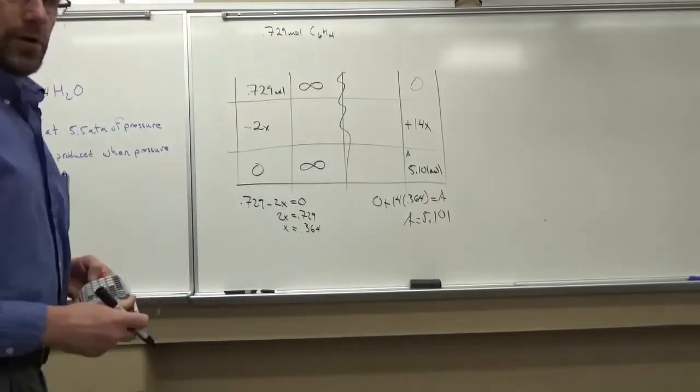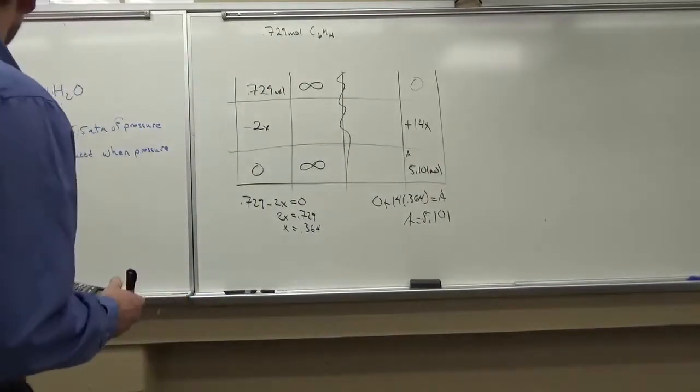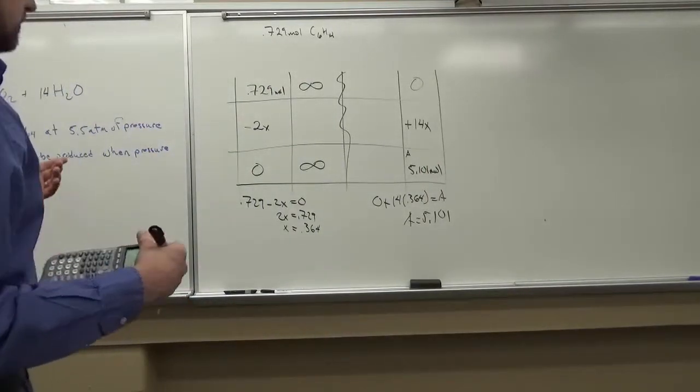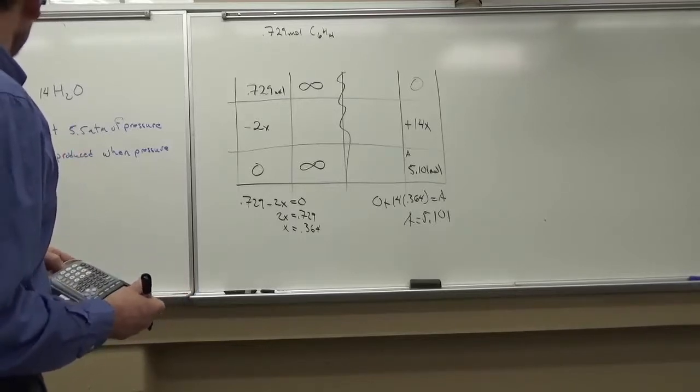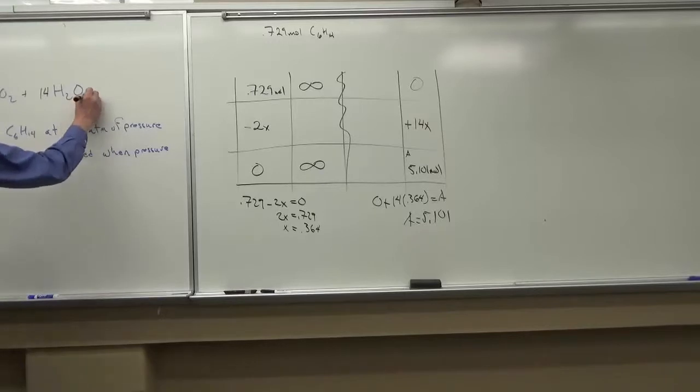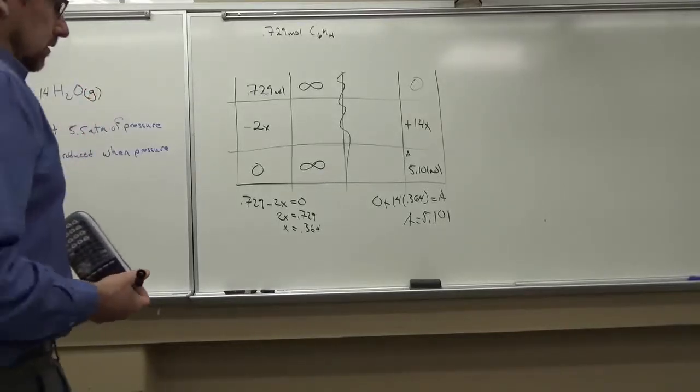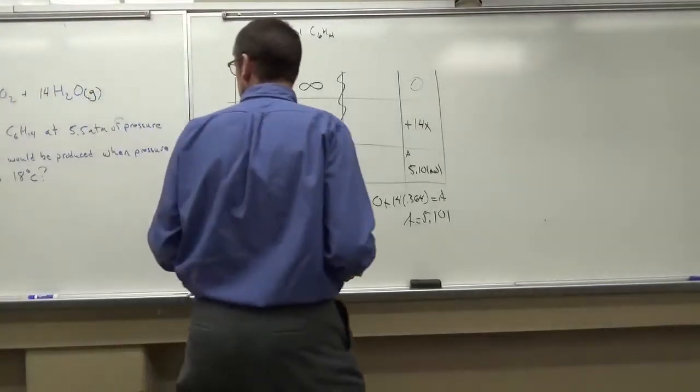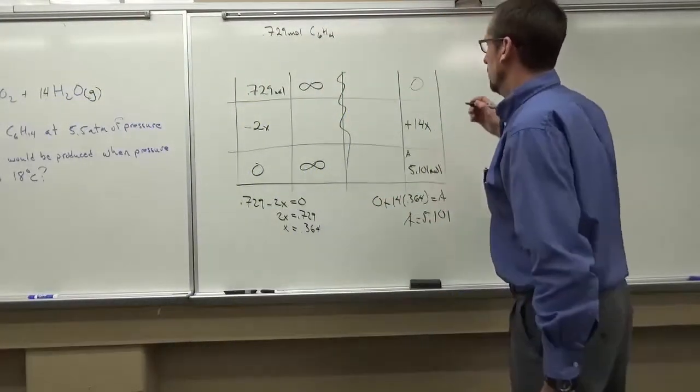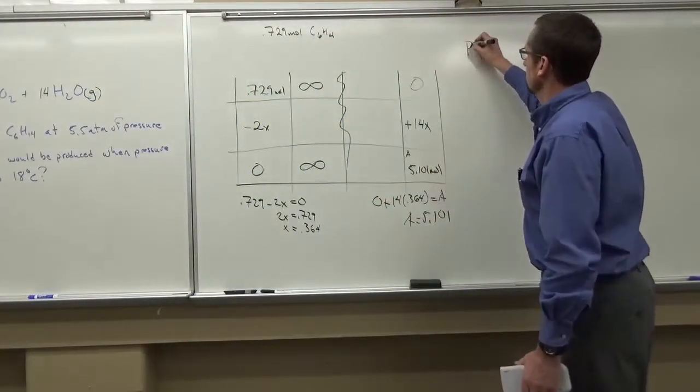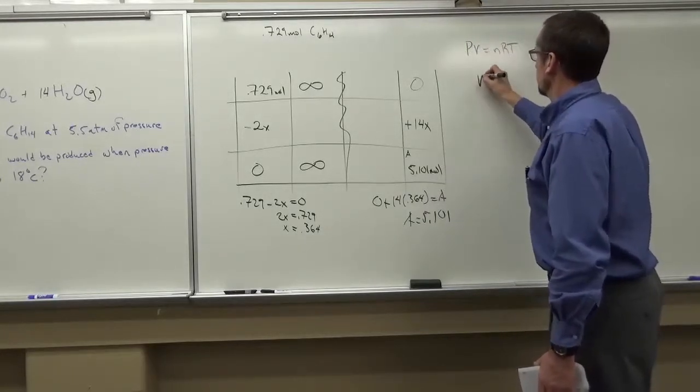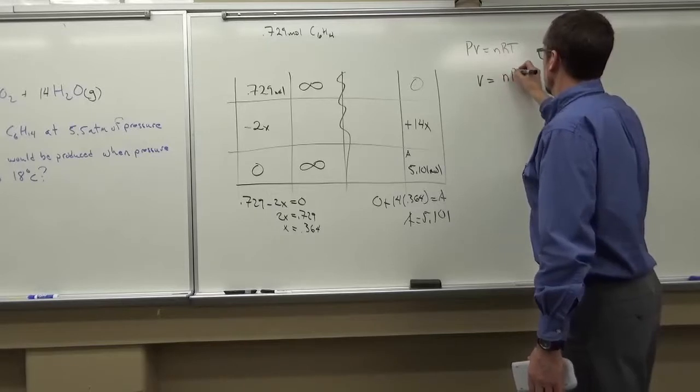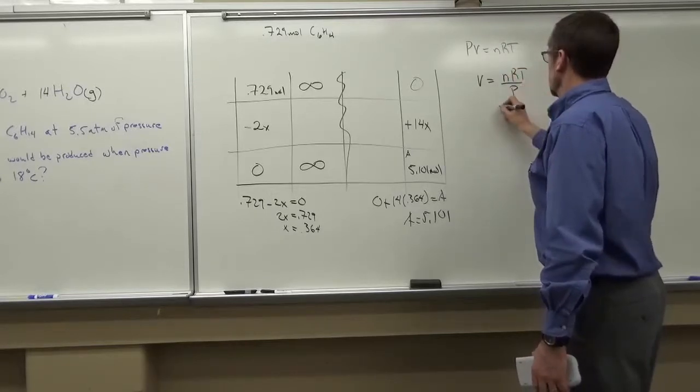Alright. So we have 5.101 moles of water. We're trying to figure out how many liters of gaseous water, so water vapor we're going to have. So we're going to go back into PV equals nRT. This time solving it for V. It's going to be nRT over P.